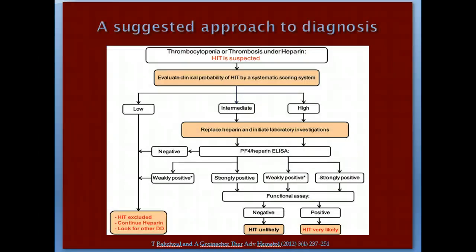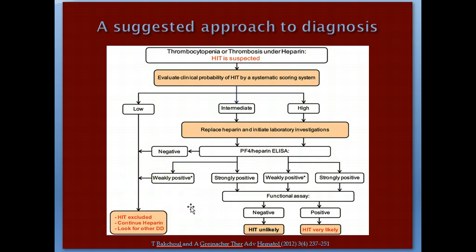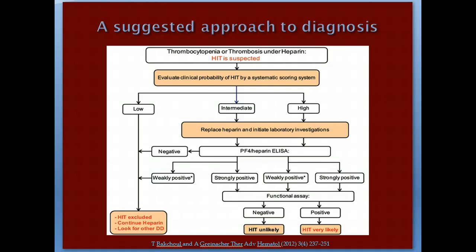The recommended diagnostic approach: if HIT is suspected, calculate the 4T score. Low probability — HIT is excluded, continue heparin, look for another cause. Intermediate probability — check antigen assay; if negative or weakly positive, HIT is unlikely. High 4T score or strongly positive antigen assay — obtain functional assay to confirm or exclude HIT. With intermediate or high 4T score, start an alternative anticoagulant while awaiting results. Unfortunately, many hospital consults have low suspicion yet patients are placed on alternative anticoagulants incorrectly.